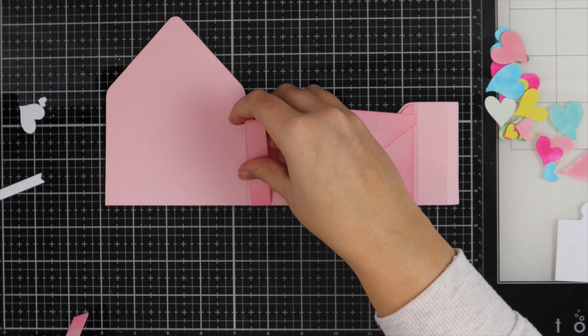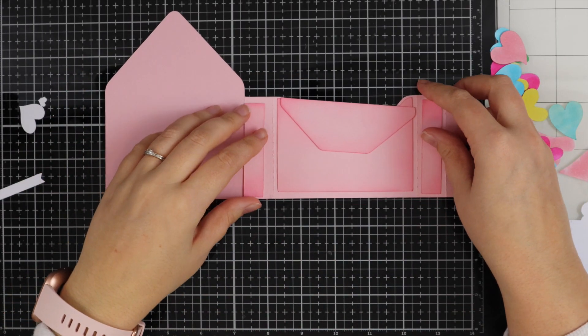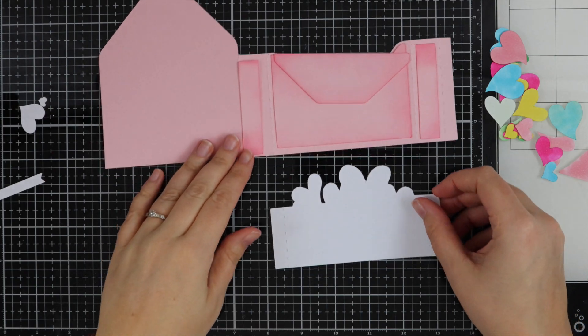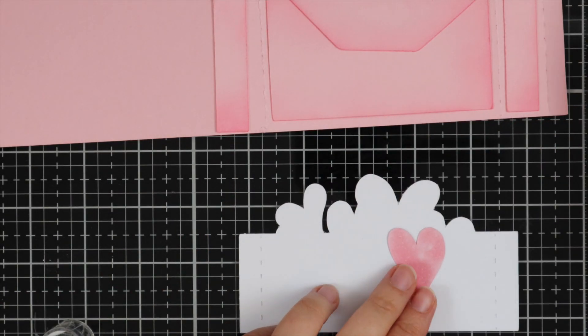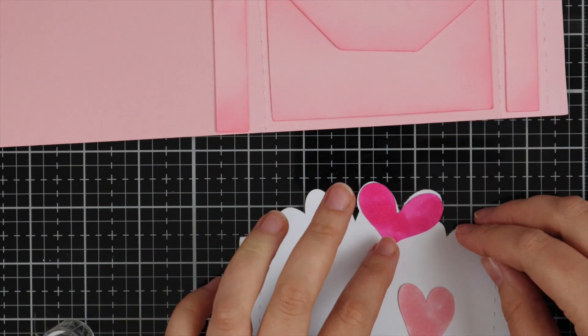So once my ink blending is done, I'm just going to pop them up on that box card just to see what they look like. And now I've got that middle piece, which is where I'm going to adhere down all the hearts.